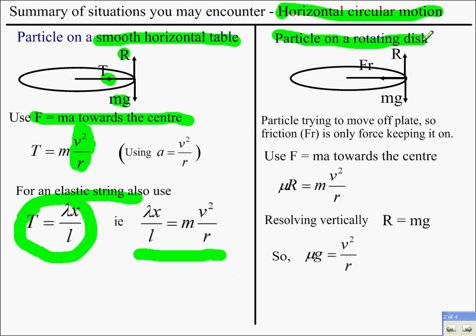Another example, particle on a rotating disc. The only thing keeping the particle on the disc in this situation is friction. And obviously, that friction will be acting towards the centre as a centripetal force. F equals ma again towards the centre. Assume in limiting equilibrium, so friction equals μR equals ma. And you can now also resolve vertically and use that R equals mg because the particle is not moving upwards or downwards off the disc. So, again, depending on what you're told from the question will determine what rearrangement you need to do to find the unknown.